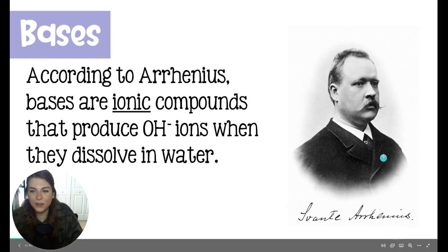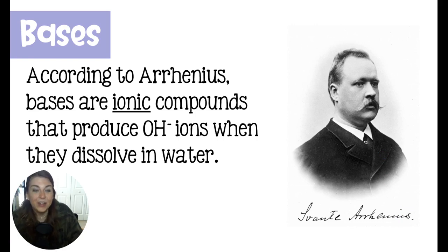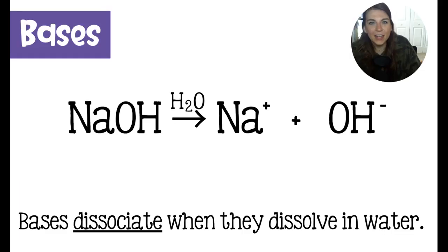This right here is Savant Arrhenius. He's got a killer mustache, and he came up with the definition of what it means to be a base. According to him, bases are ionic compounds that produce hydroxide ions when they dissolve in water. Just like any other ionic compound that is soluble in water, it dissociates into its ions. If we had, for example, sodium hydroxide dissolved in water, we get sodium ions as the only positive ion and hydroxide ions as the only negative ion. This hydroxide ion is what made sodium hydroxide a base.